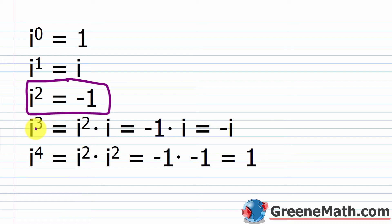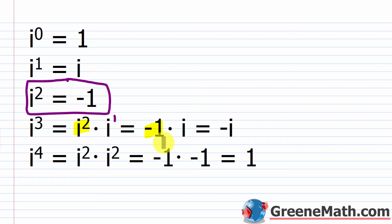When we get to i cubed, we use rules of exponents. We break it up and say it's equal to i squared times i. By the rules of exponents, the base stays the same and we add two plus one to get back to three — nothing illegal there. Then we take the fact that i squared by definition is negative one and replace it, giving us negative one times i, which is just negative i.